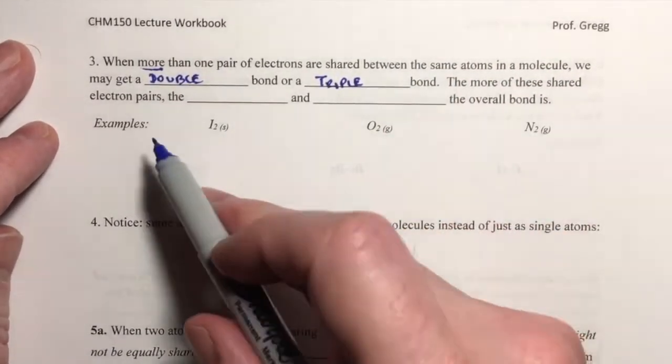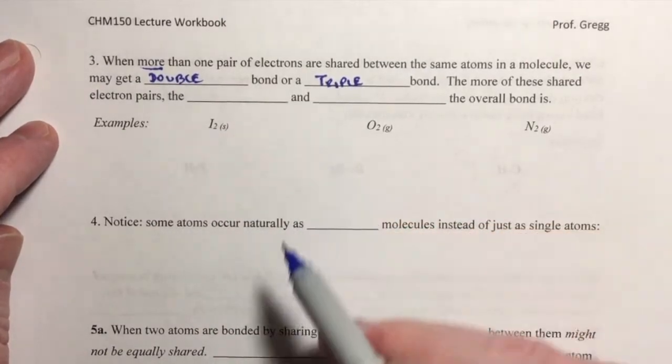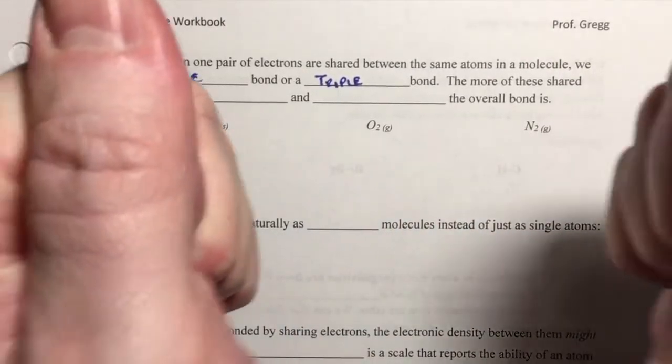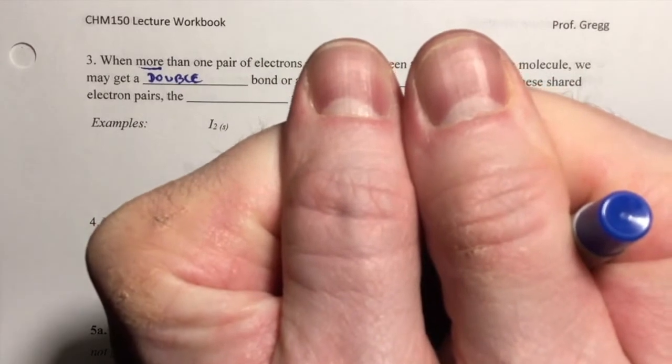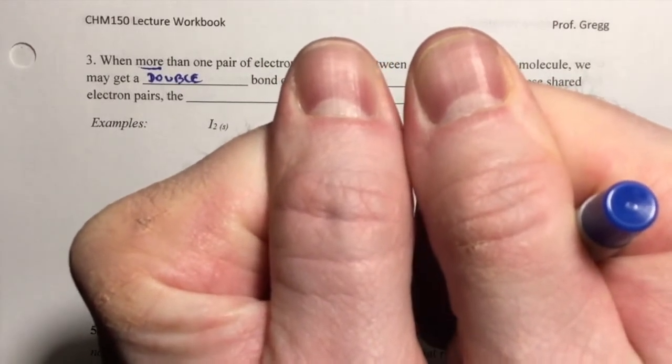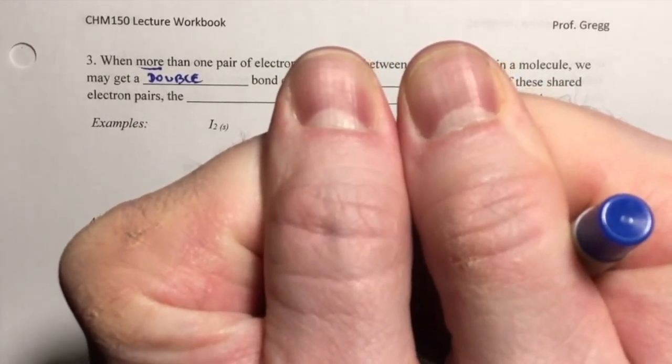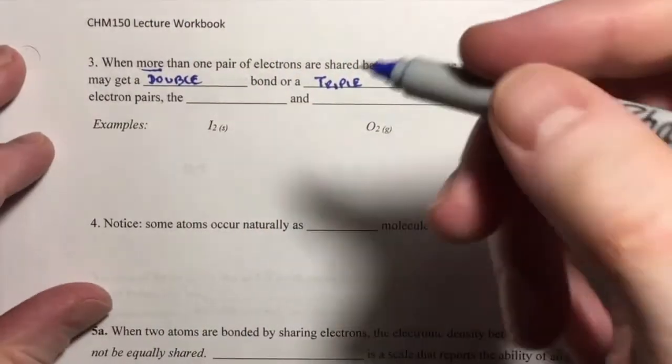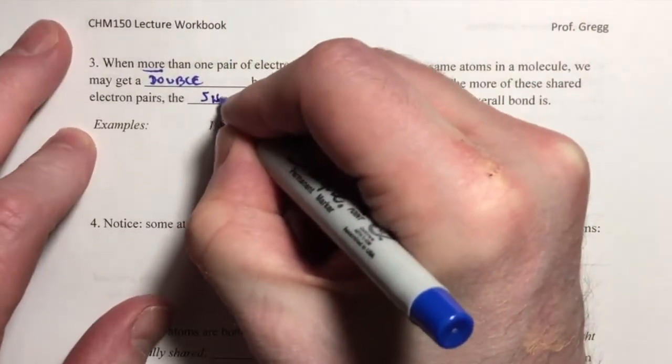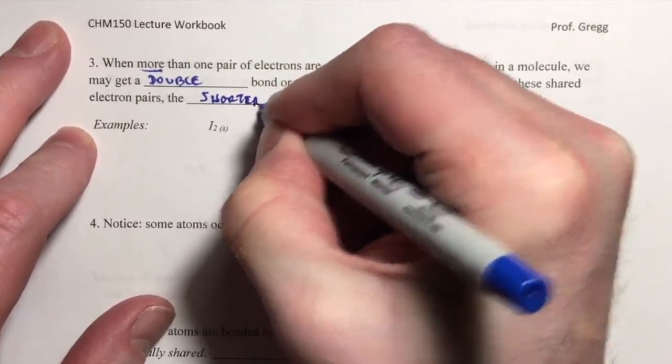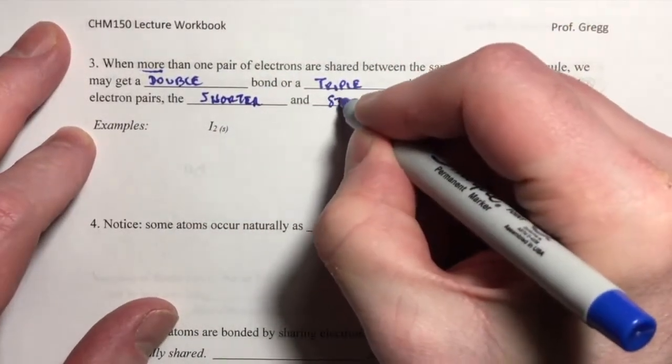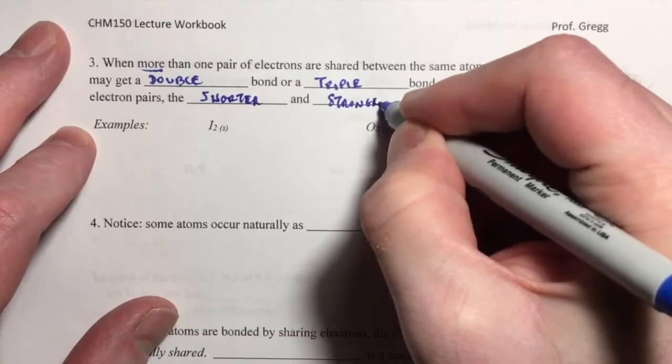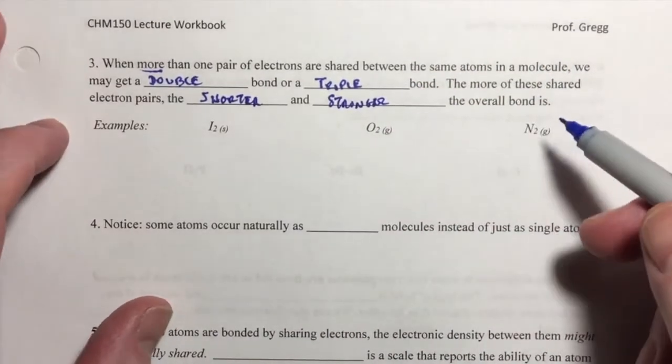And the more of these shared electron pairs that you have, the tighter it's going to hold the atoms together, and so the shorter the distance is going to be between them, and the stronger they're going to be held together. So the shorter and the stronger the overall bond is.